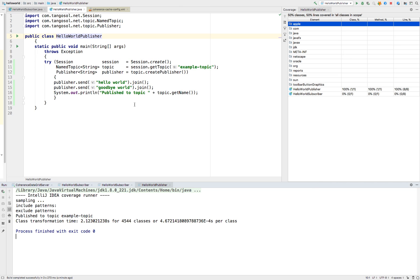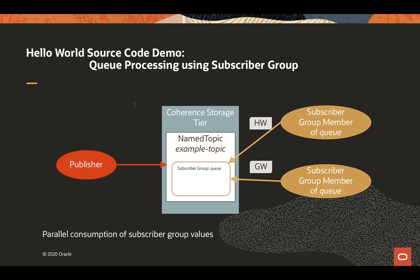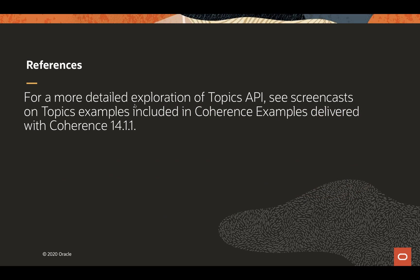That concludes our demonstration. For more detailed exploration of the Topics APIs, there will be screencasts of more in-depth topic examples included in Coherence examples delivered with Coherence 14.1. There's one on subscriber groups and how to scale up message processing using subscriber groups. And there's another that details publish-subscribe and durable subscriptions in more detail.